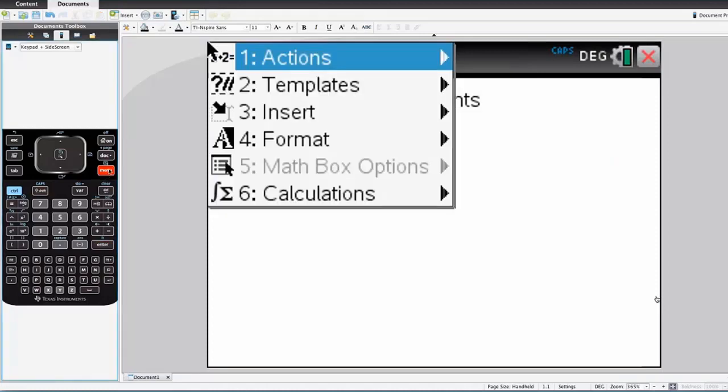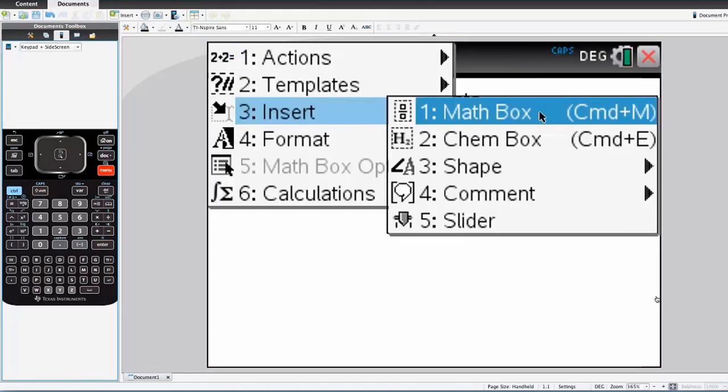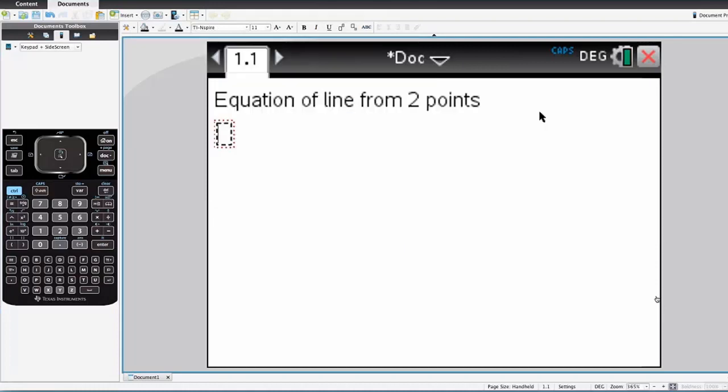And then insert a math box, which is Control-M or Command-M on my computer. And first let's work out what the two points are. So here are the coordinates of the first point, x1, y1. And I'm just making these numbers up for now for the purpose of the example.